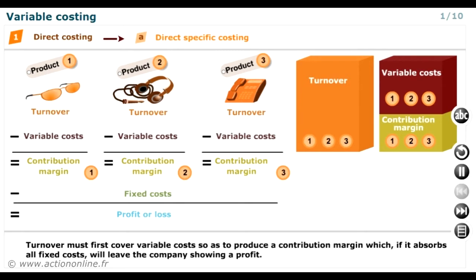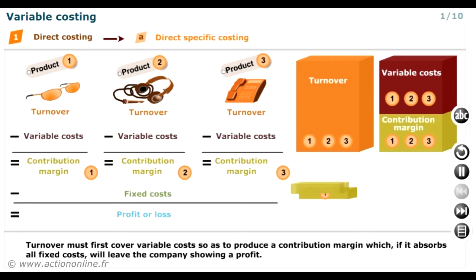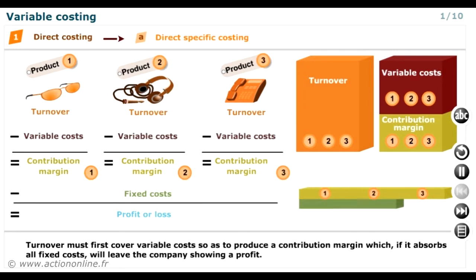The company's turnover must first cover the variable costs of the product sold, so as to produce a contribution margin, which, if it absorbs all fixed costs, will leave the company showing a profit. There will therefore only be a profit if the contribution margin is higher than the fixed costs.